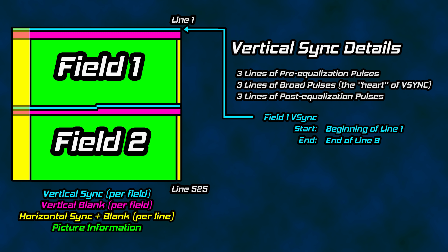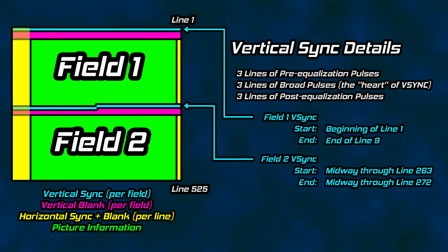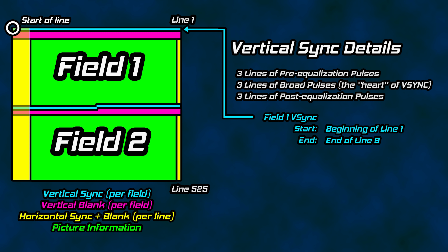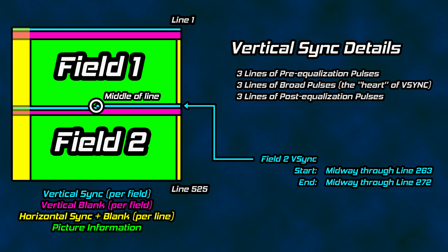Lines 1 through 9 contain vertical sync used for the first field's information. The second vertical sync occurs at the midway point of line 263 and ends at the midway point of line 272. The difference of when vertical sync begins relative to the start of the horizontal line determines which field to use and therefore where to draw the image on the screen. Does vertical sync start at the beginning of the line? Draw to field 1. Does it start at the middle of the line? Draw to field 2.